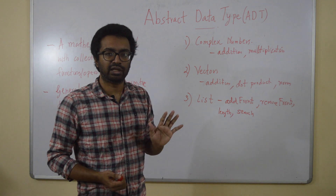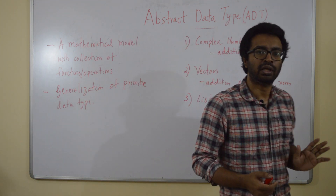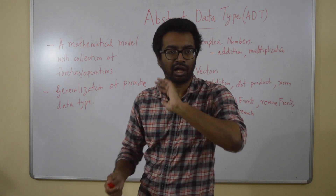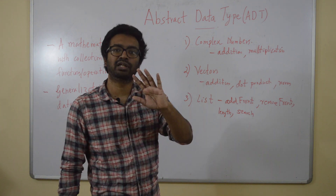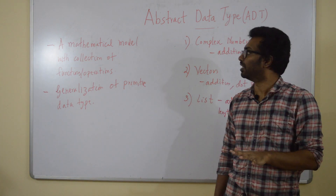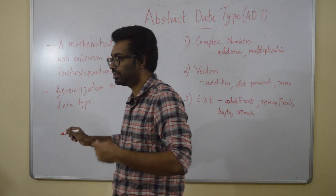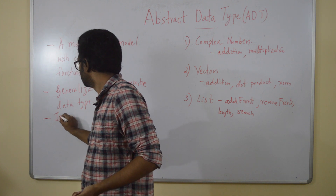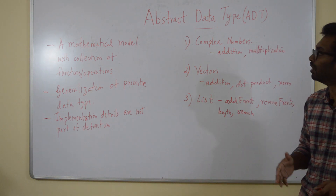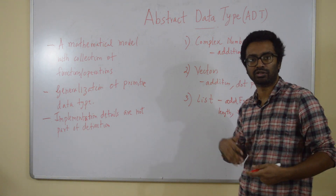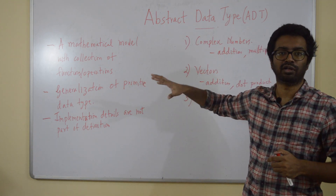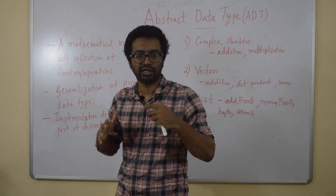So that's the concept of an abstract data type. The implementation details are hidden — that is not mentioned as part of the abstract data type. How each vector, list, or complex number is implemented is not part of the definition of an abstract data type. The implementation can be different if you are implementing in C, C++, or any other programming language. This is a mathematical model, and therefore the implementation details are hidden.